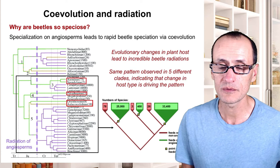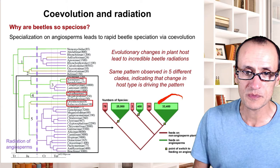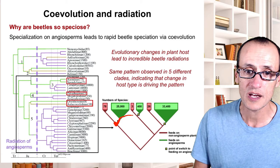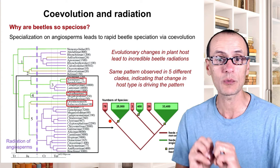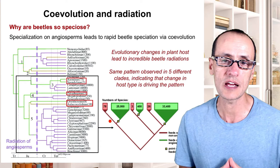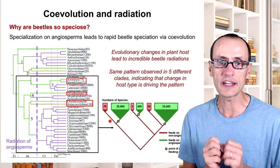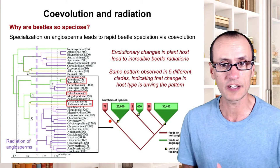Groups that feed on angiosperms are much more speciose than sister groups feeding on non-angiosperms, and this pattern was repeated multiple times over the evolutionary phylogeny of beetles. This lends support to the idea that association with flowering plants undergoing rapid speciation was also associated with rapid speciation of the insect hosts — consistent with the adaptation and radiation that Ehrlich and Raven had hypothesized.